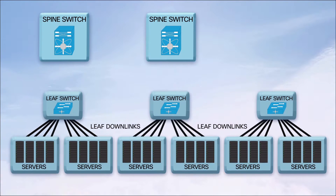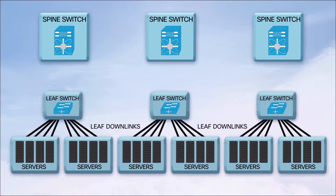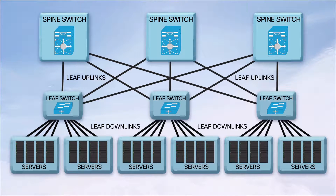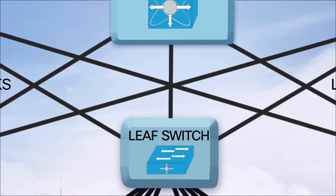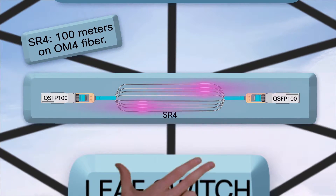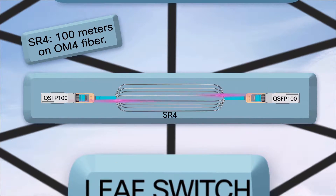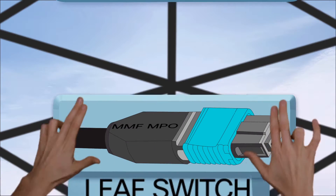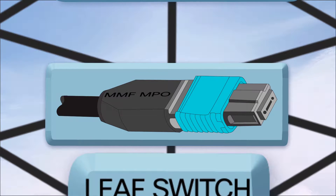For the uplinks to the spine switches, we have some choices, but it's tied to the type of fiber cable infrastructure you choose or have already installed. If you have multimode fiber, you can use SR4 up to 100 meters. SR4 requires parallel fiber with MMF MPO connectors.